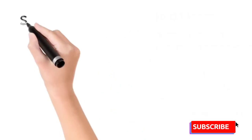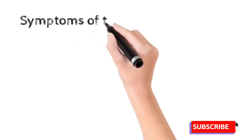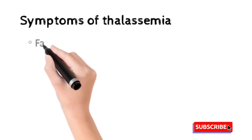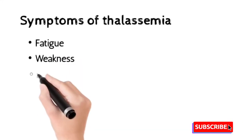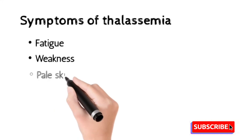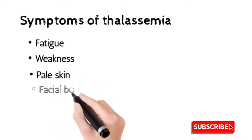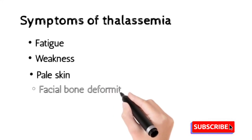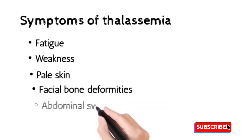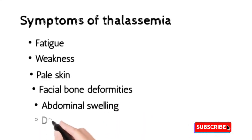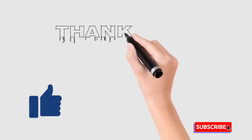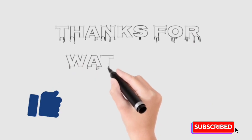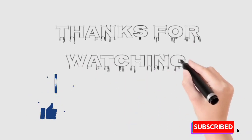For more details about thalassemia, write in the comment section and a detailed lecture will be uploaded separately. Symptoms of thalassemia include fatigue, weakness, pale skin, abnormal facial bone deformities, abdominal swelling, and dark urine. Thanks for watching — if you liked this video, please subscribe to the channel, share it with your friends, and write any questions in the comment section.